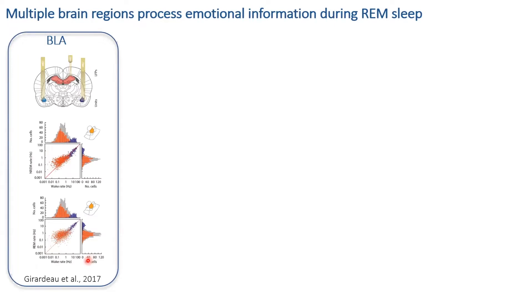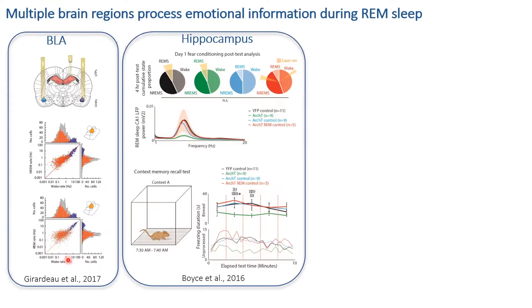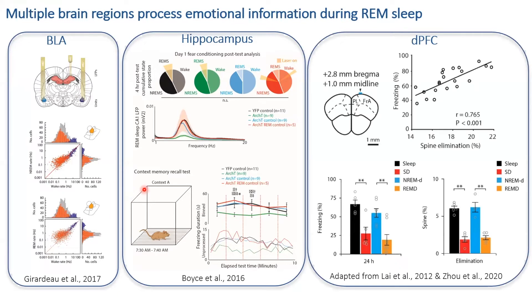Buzsáki and colleagues showed that putative pyramidal neurons in the basolateral amygdala are reactivated during REM sleep with activity significantly higher than during wakefulness. In our lab, we found that theta activity generated in the hippocampus during REM sleep is important for consolidation of emotional information — optogenetically perturbing this activity impaired behavioral performance in a context memory recall test. More recently, work in New York found the dorsal prefrontal cortex undergoes structural reorganization after fear conditioning, strictly linked to REM sleep.